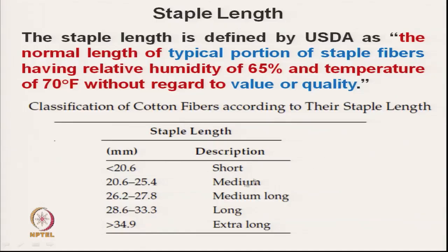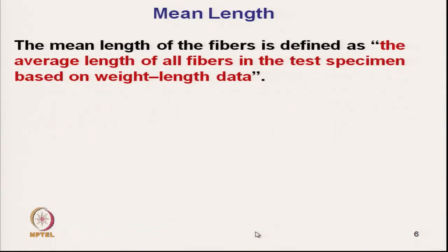As per USDA norms, less than 20.6 mm is short fibre; 20.6 to 25.4 mm is medium length fibre; and above 34.9 mm is extra long fibre. This is the classification of staple length as per USDA.